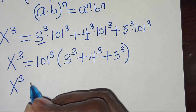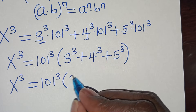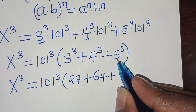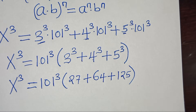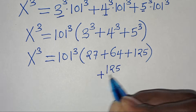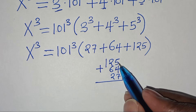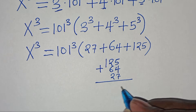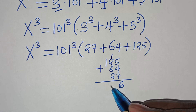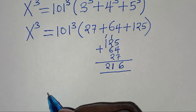So x to the power of 3 is equal to 11 to the power of 3, times, into the parentheses: 3 to the power of 3 is 27, plus 4 to the power of 3 is 64, plus 5 to the power of 3 is 125. Now 125 plus 64 plus 27: 5 plus 4 is 9, plus 7 is 16, carry 1; 1 plus 2 is 3, plus 6 is 9, plus 2 is 11, carry 1; 1 plus 1 is 2. So we have a total of 216.